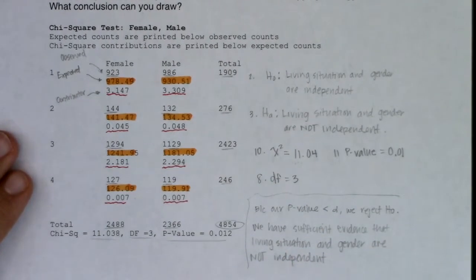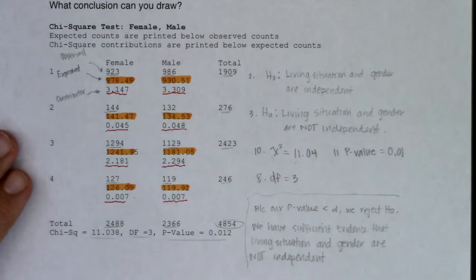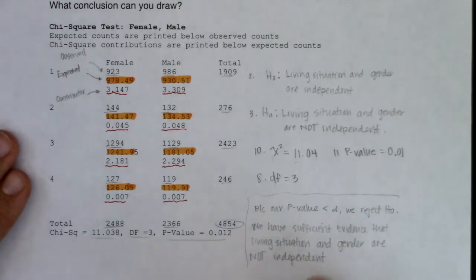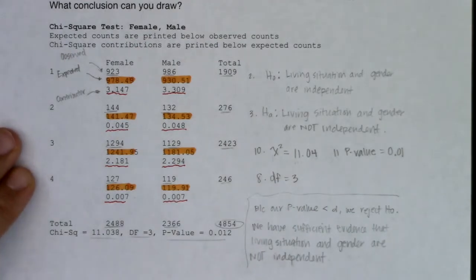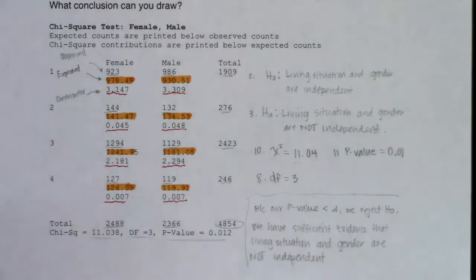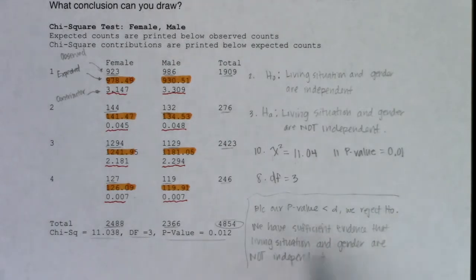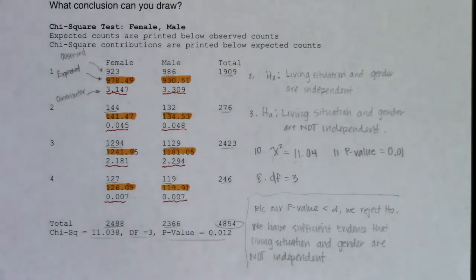Because I rejected the null, I might have made a type one error. I can also say my results are statistically significant — any time you reject the null, it is statistically significant because we rejected the status quo. To review: whenever you reject the null, you might have made a type one error, and you can say your data is statistically significant. That wraps up chapter 11 — we'll do a quick summary and then move on to our last chapter.